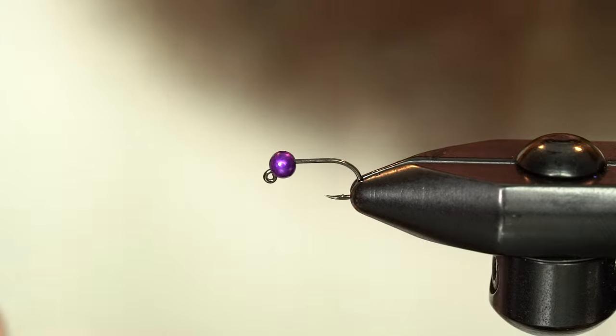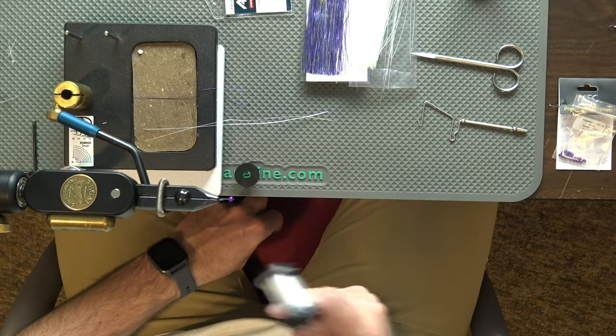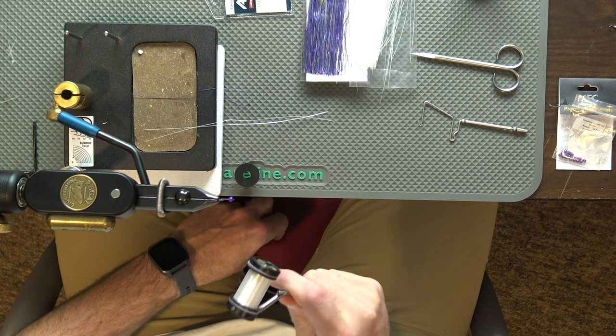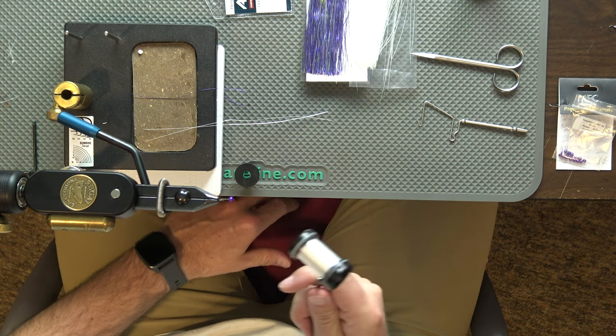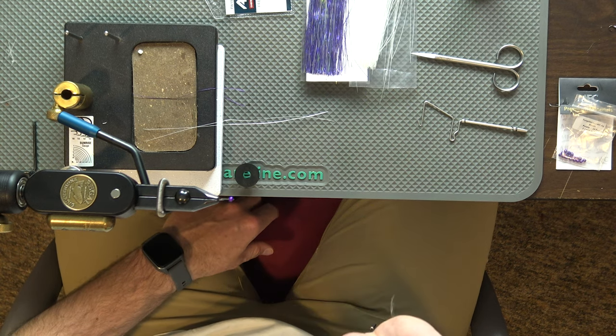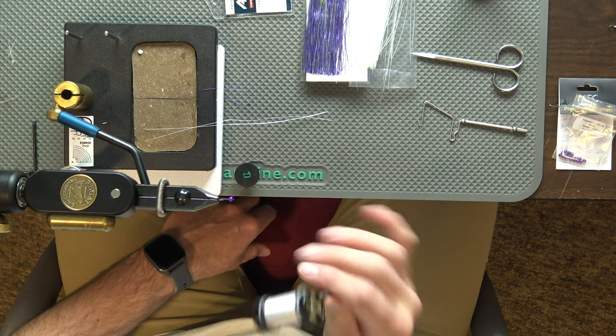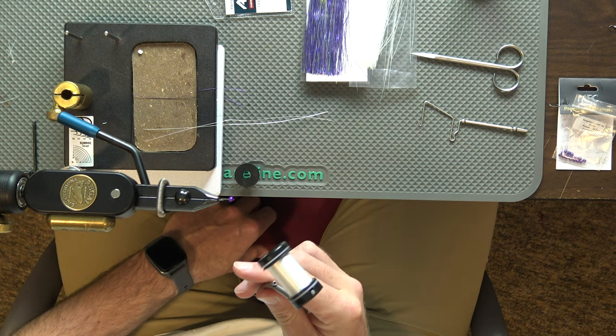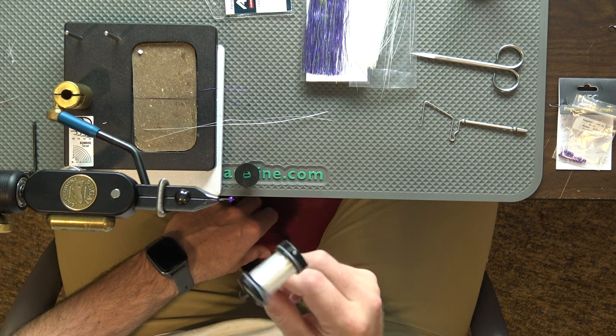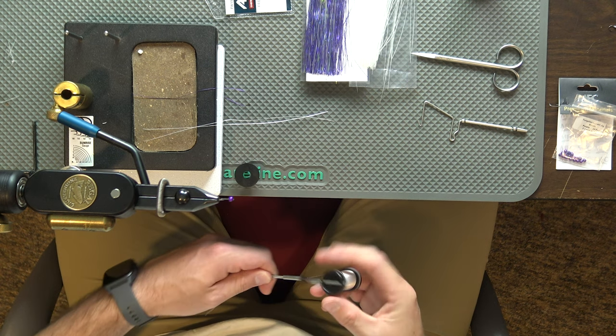I like this for pretty much everything. If I'm tying streamers I'd go up to maybe the 100, really big streamer, maybe like 150. This is pretty universal though for a lot of stuff that I tie. I really like the Rite bobbins so I just have a couple of these and pretty much tie exclusively with the NanoSilk.